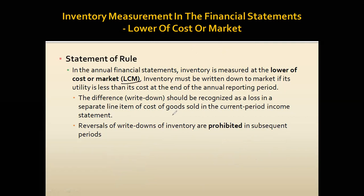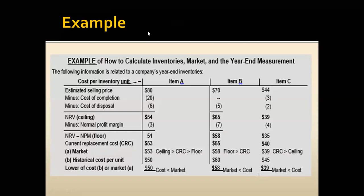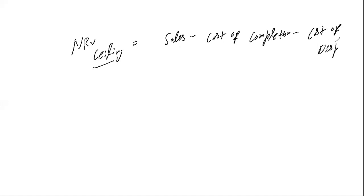As per GAAP treatment, we apply the LCM rule, and to do so we must learn how to calculate market first. To calculate market, you need to understand two terminologies. First, calculate NRV ceiling using the formula: Sales minus cost of completion minus cost of disposal.